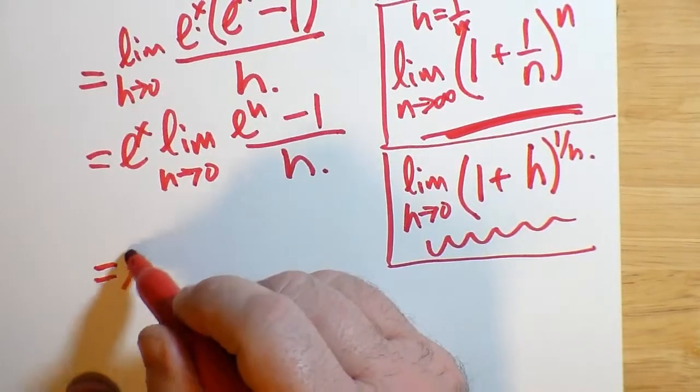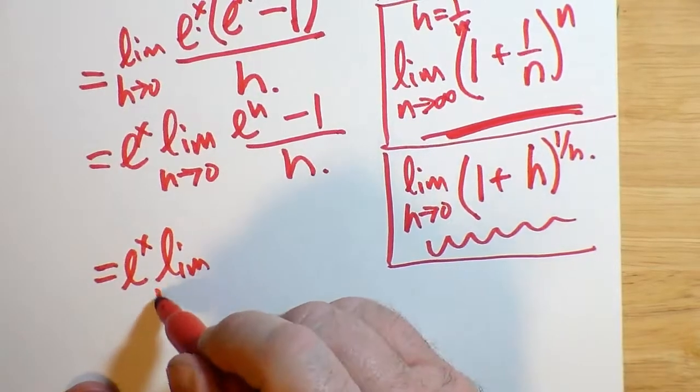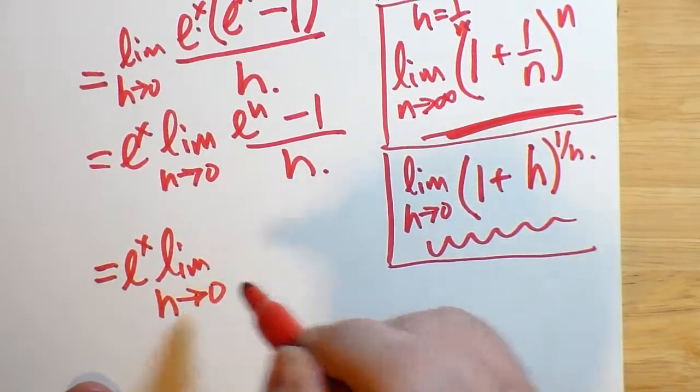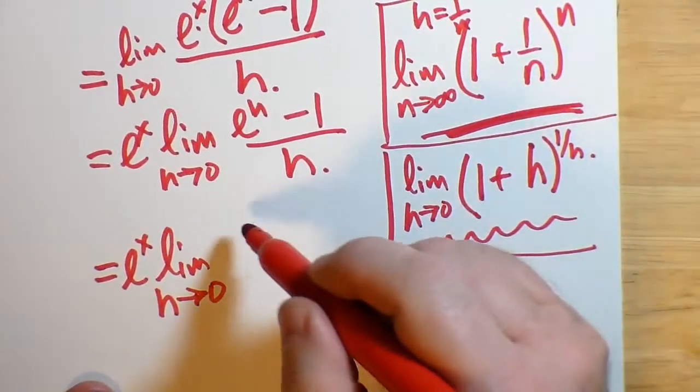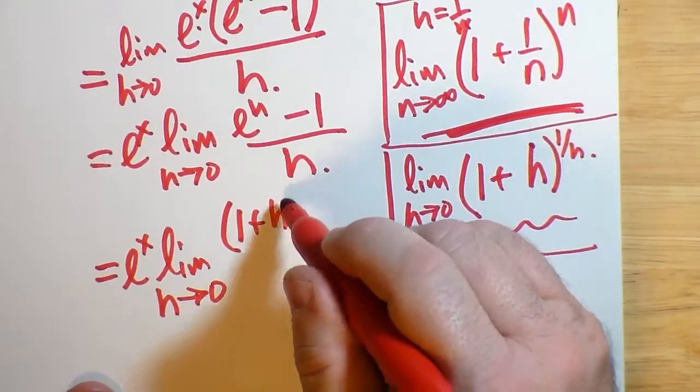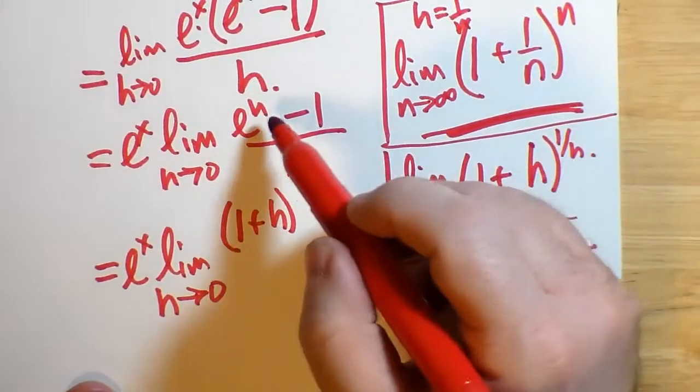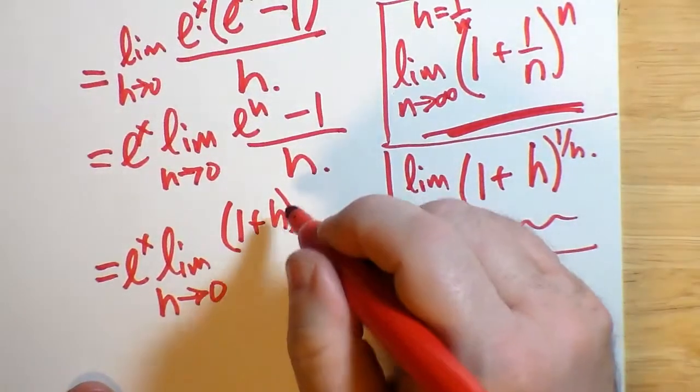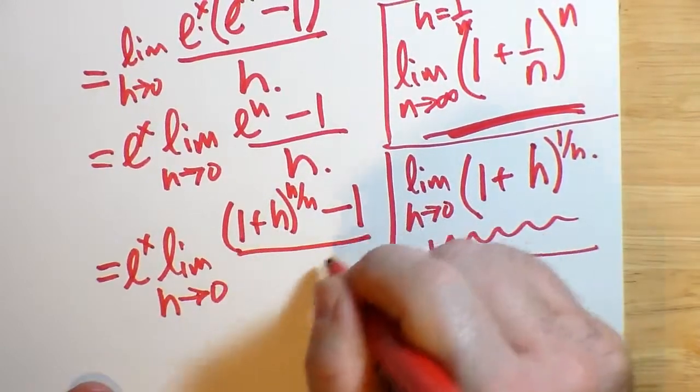So this takes us to e to the x times the limit as h goes to 0 of 1 plus h to the power of 1 over h, but this is already to the power of h. So that becomes h over h subtract 1 all over h.